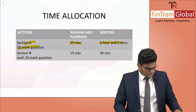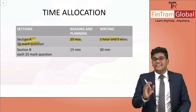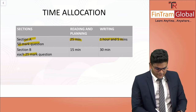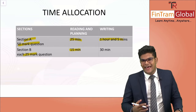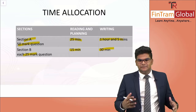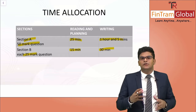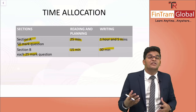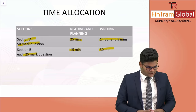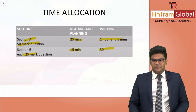Moving on to Section B — for each 25-mark question, you're going to take 15 minutes to read and plan and 30 minutes to write it. With great practice, you will become more compatible with this particular time allocation strategy. That's basically a small guidance on the time allocation part.